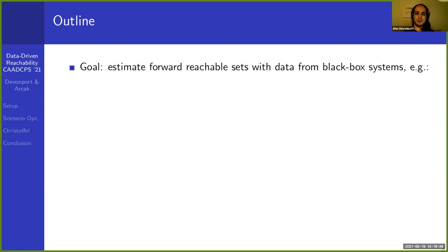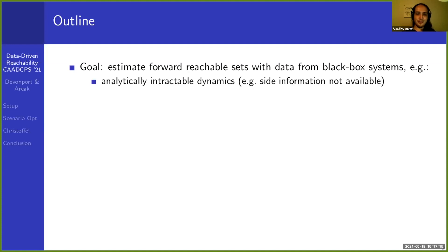The goal in this work is to estimate forward reachable sets using data collected from black box systems — systems where we don't have any analytical access, but can make individual point evaluations. Clear examples include physical experiment-based systems, but also simulation environments. One instance is when you have a system with analytically intractable dynamics — dynamics that are known mathematically in principle, but where side information such as Jacobian matrices or monotonicity properties are not easy to compute or assert.